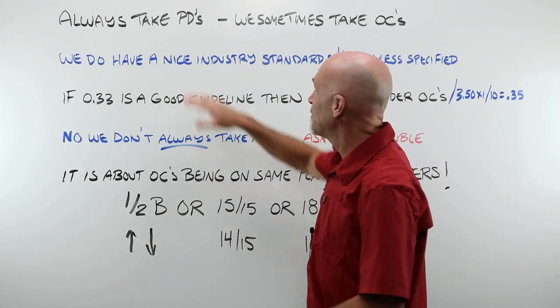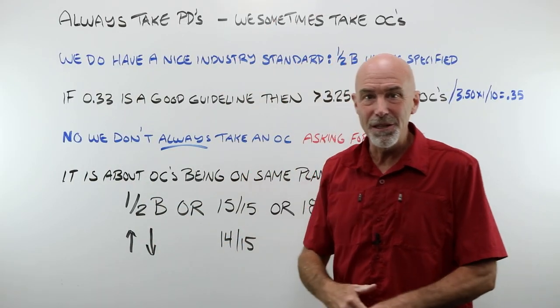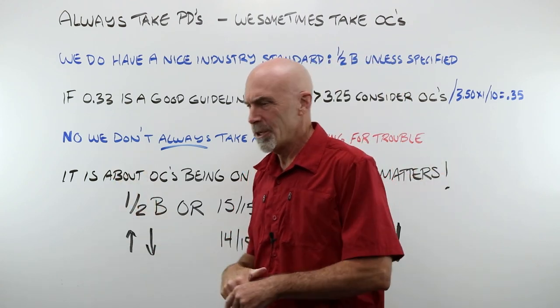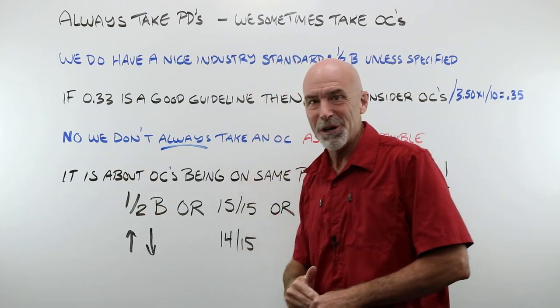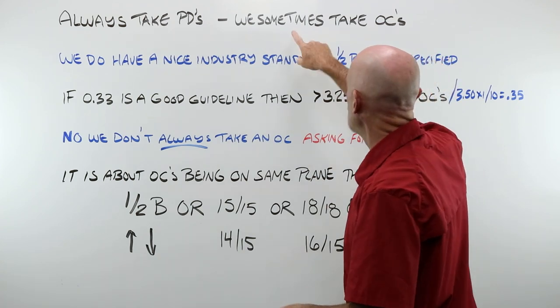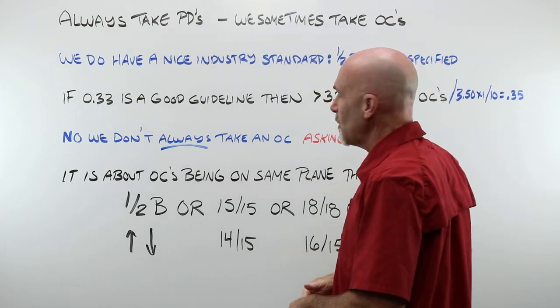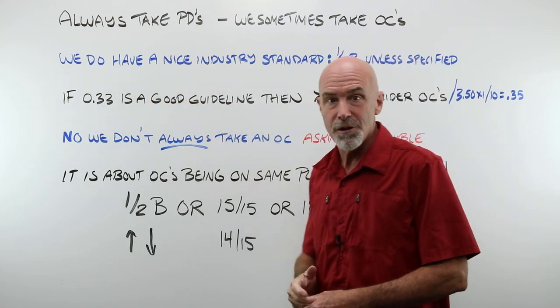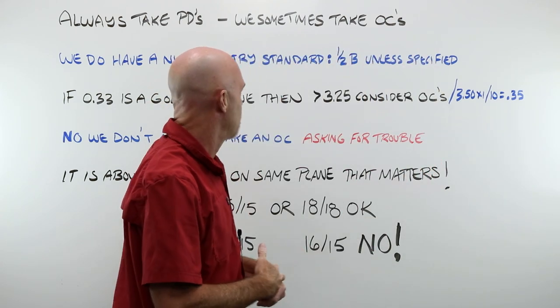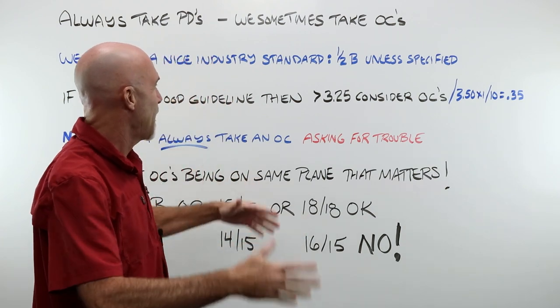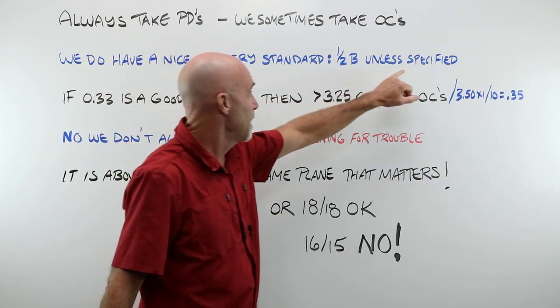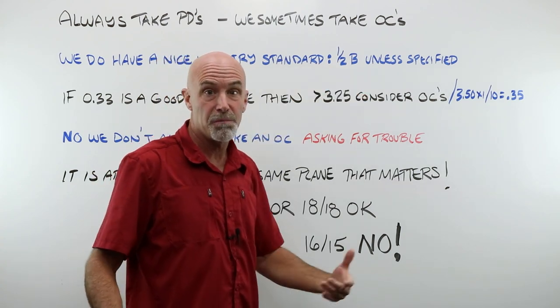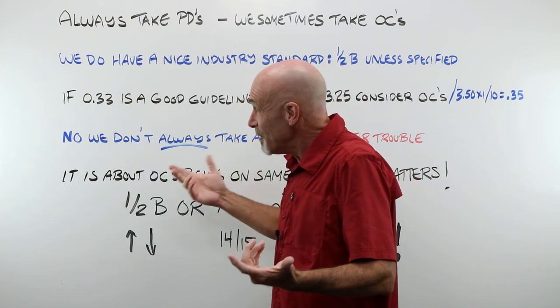I think that we can all agree that we always take PDs, right? We either have our corneal reflex pupillometer or our nice optic cam, but we only sometimes take OCs. We actually do have a really nice industry standard, a way that every single place does it, every lab agrees, that unless an OC is specified, the OC is placed at half the B of the frame.